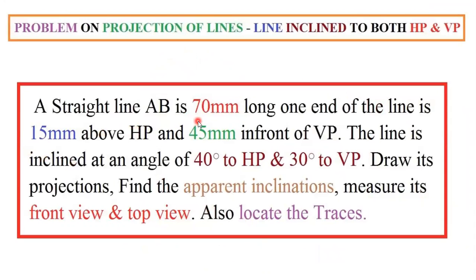The question is: a straight line AB is 70mm long. So 70mm will be denoting the true length of the line. One end of the line is 15mm above HP and 45mm in front of VP. So one point will be above HP, that is above the XY line, and the other point will be 45mm in front of VP. The line is inclined at an angle of 40 degrees to HP and 30 degrees to VP. Draw its projection, find the apparent inclination — which will be the top view and front view angles — and finally locate the traces. These are the given data.